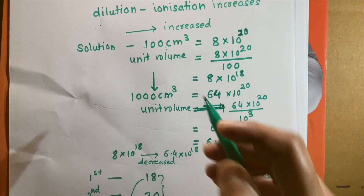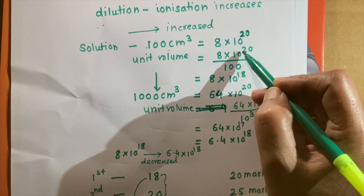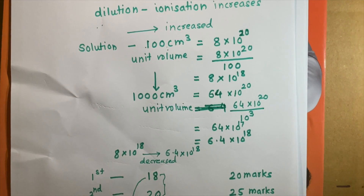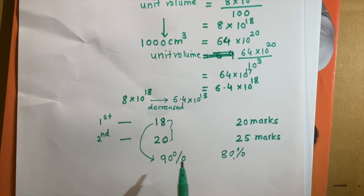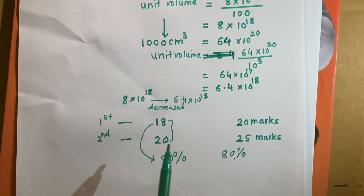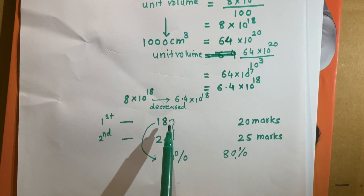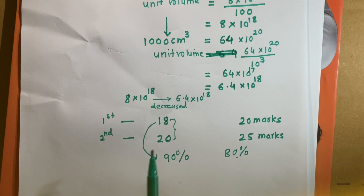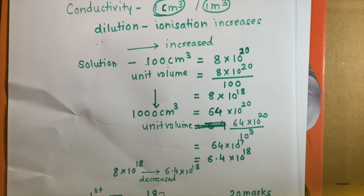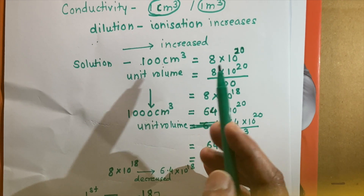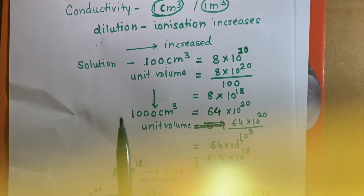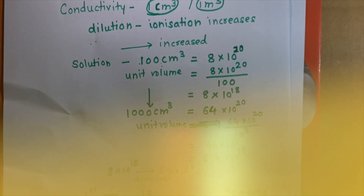Same case applies here. We diluted the solution and the number of ions increased, but not in the same proportion as the dilution. Just as the student needed 23 or 24 marks to maintain 90%, there is an increase in ions but the proportion — and therefore conductivity — decreases. So remember: as concentration decreases, the conductivity decreases. In the next video, we shall consider how molar conductivity changes with change in concentration.